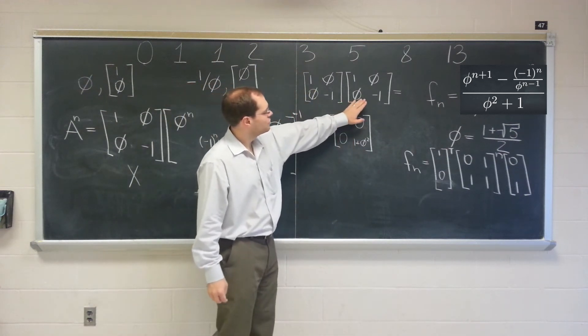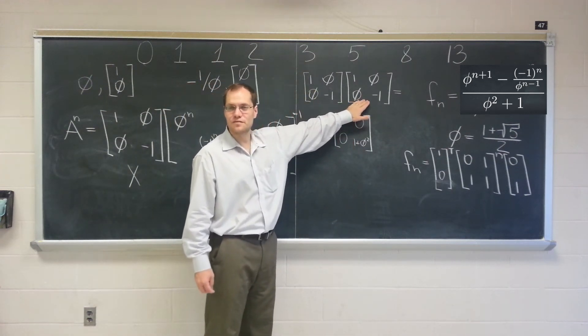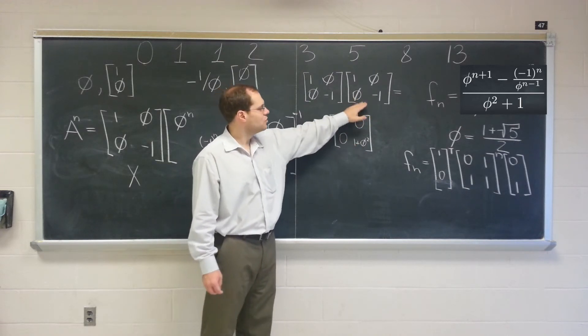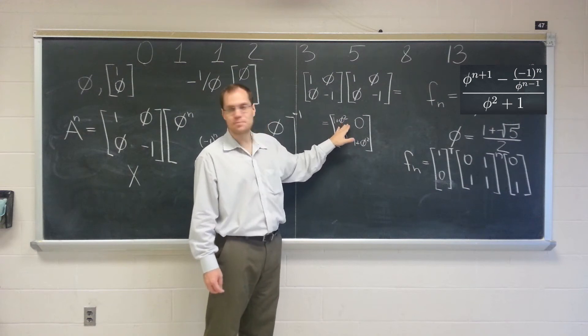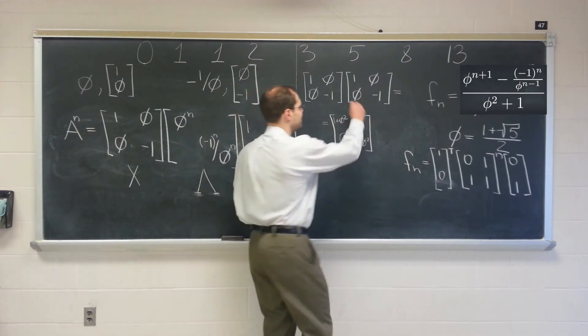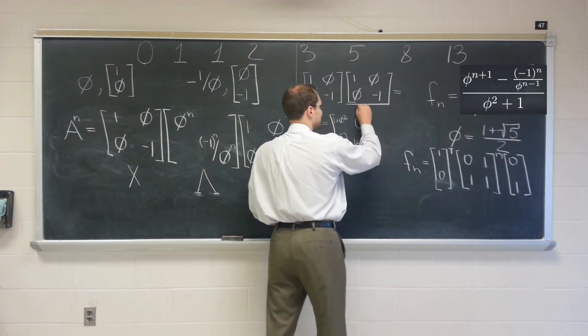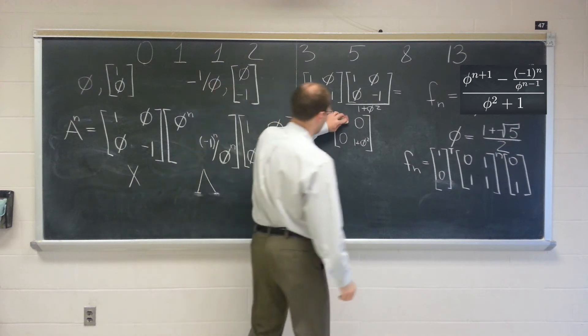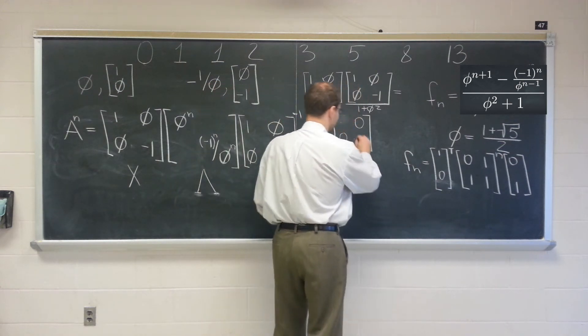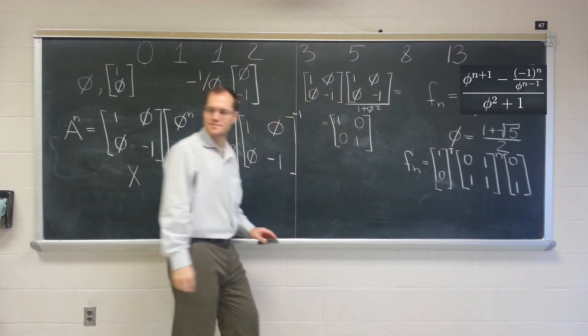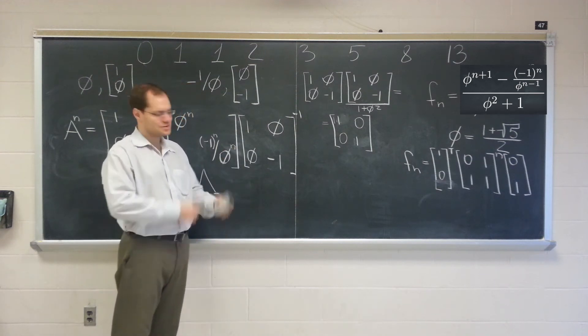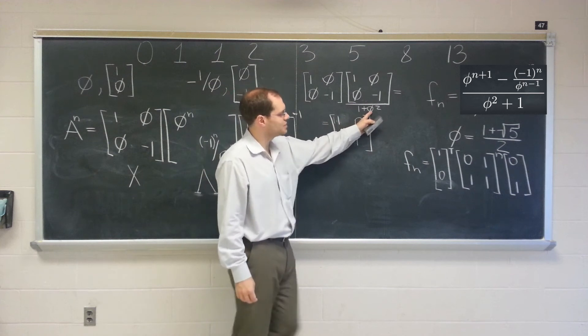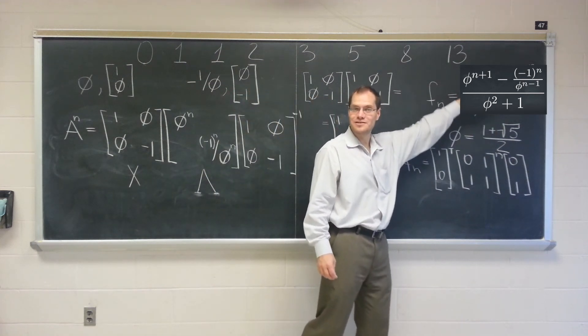So basically, it's almost like its own inverse. Except instead of getting the identity, you get identity times 1 plus phi squared. So if I were to take this matrix and divide it by 1 plus phi squared every entry, then we would, in fact, get the identity matrix. So it's a very special matrix that's almost its own inverse. You just have to divide it by 1 plus phi squared. So are you beginning to see this sort of forming slowly?